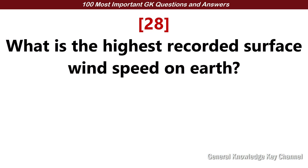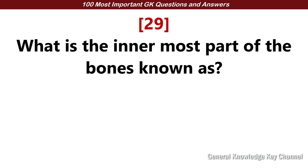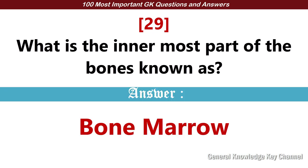What is the highest recorded surface wind speed on earth? Answer: 372 km per hour. What is the innermost part of the bones known as? Answer: Bone marrow.